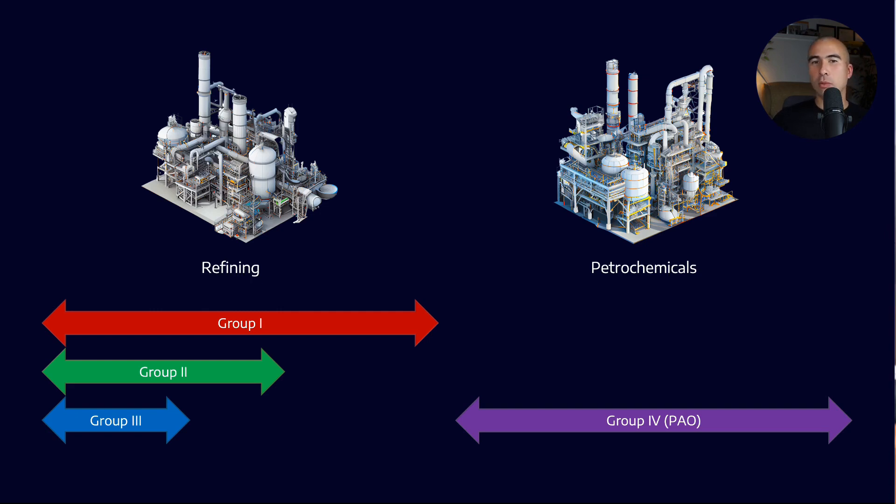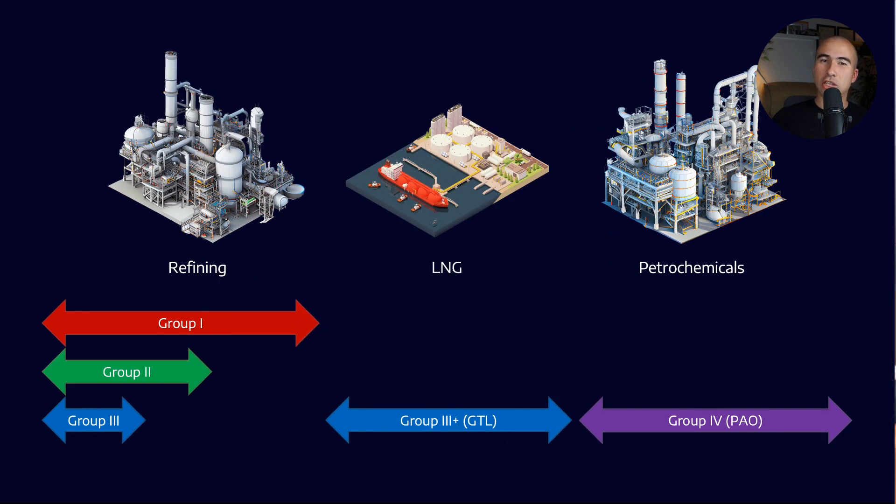Now, there is, of course, a third value chain, which I've kind of ignored, which is the LNG value chain, where you can get the Group 3 pluses, that is to say, the GTL liquids. Now, when you actually look across some of the base stock suppliers, what you'll find is that they don't tend to be able to offer the complete range of different base stocks that are on the market.